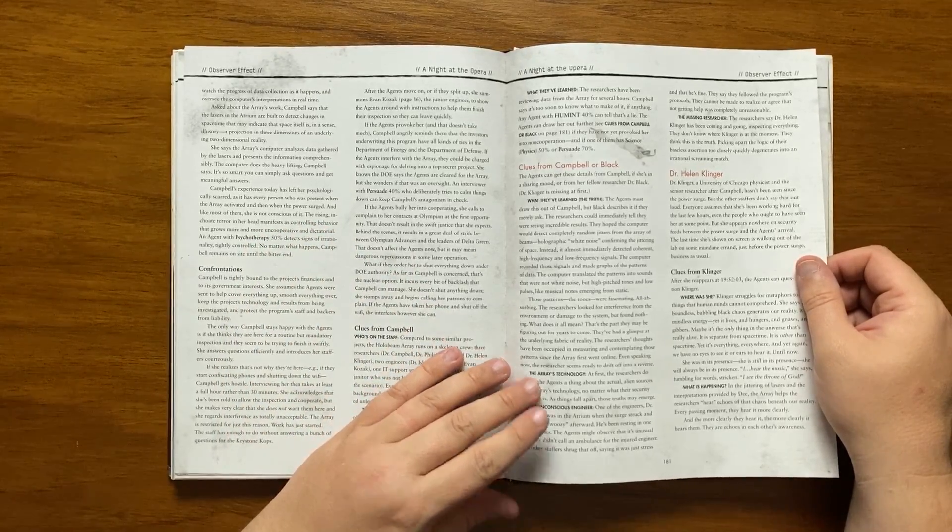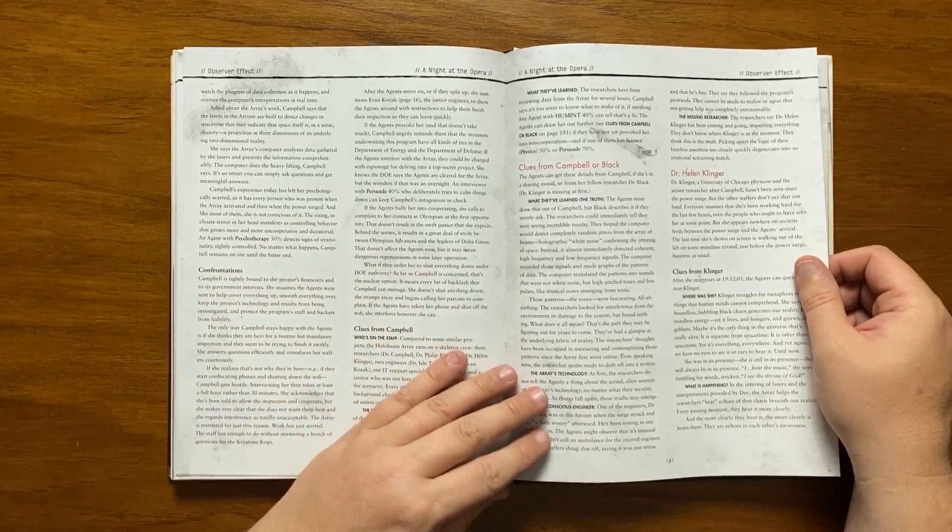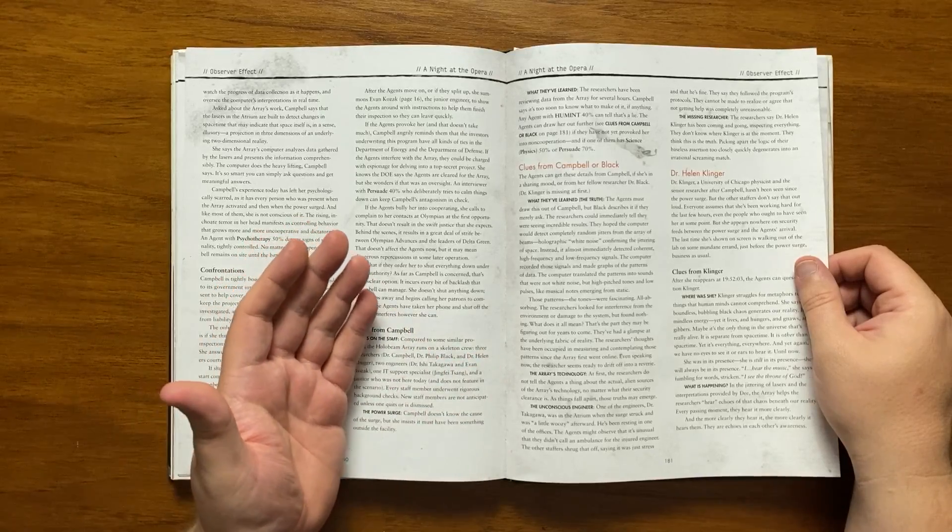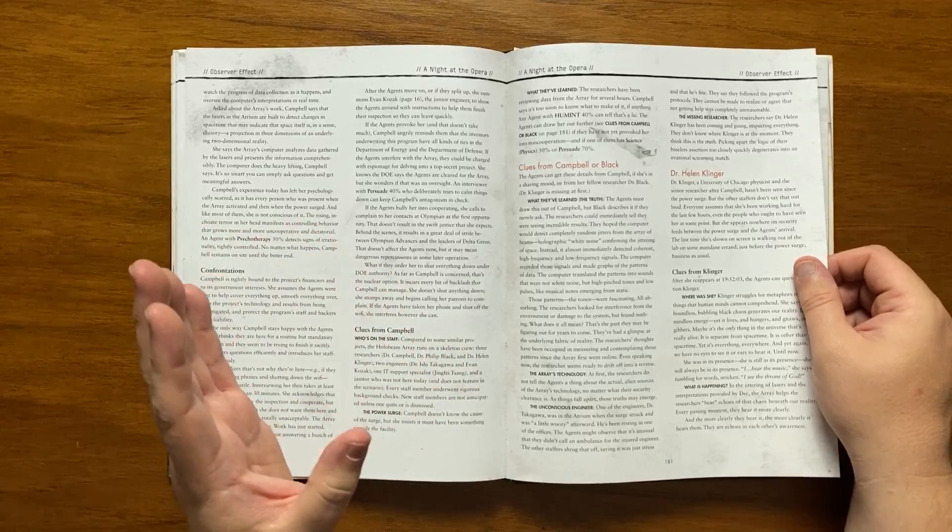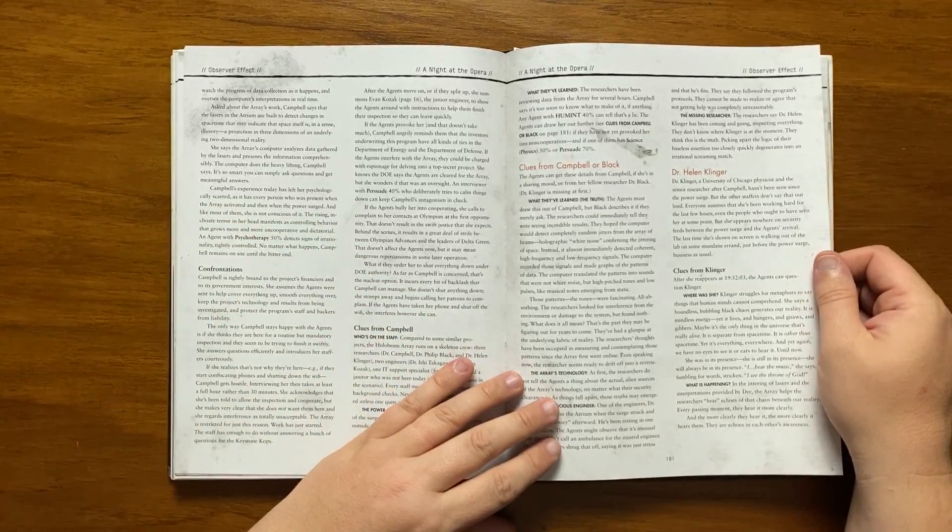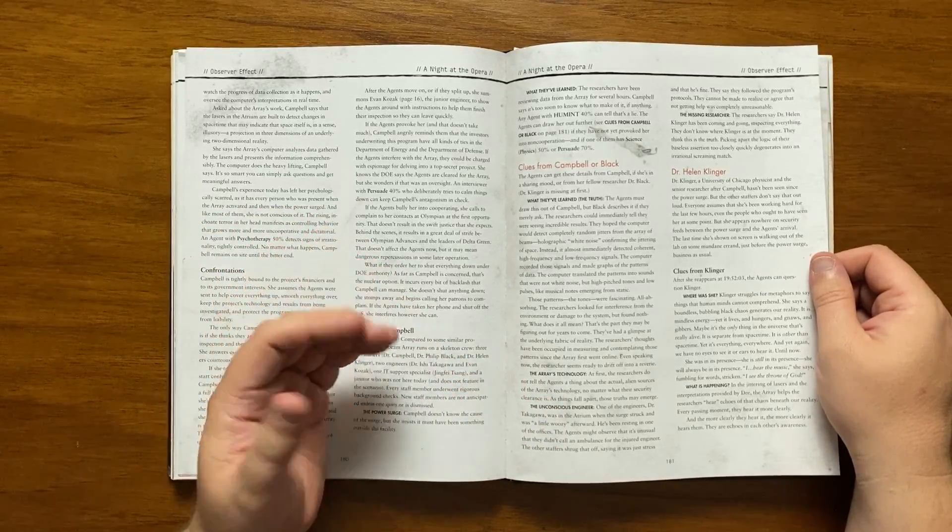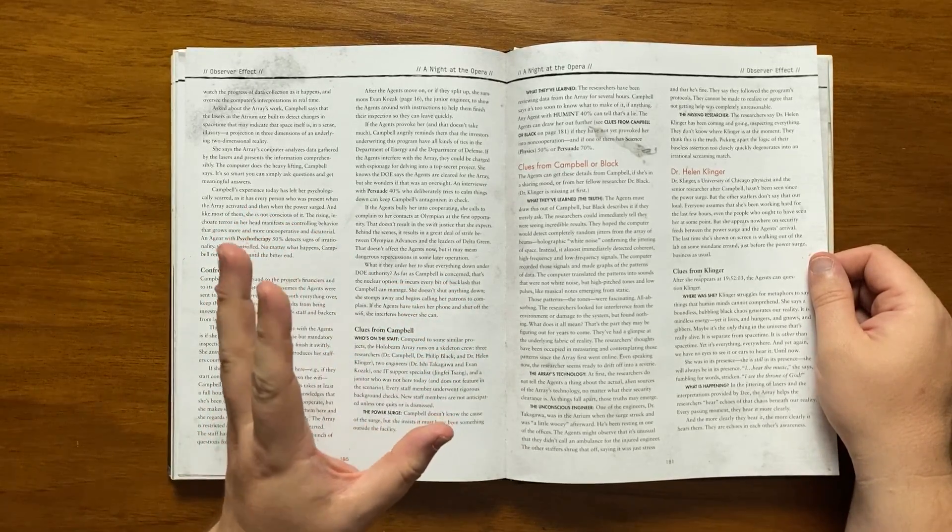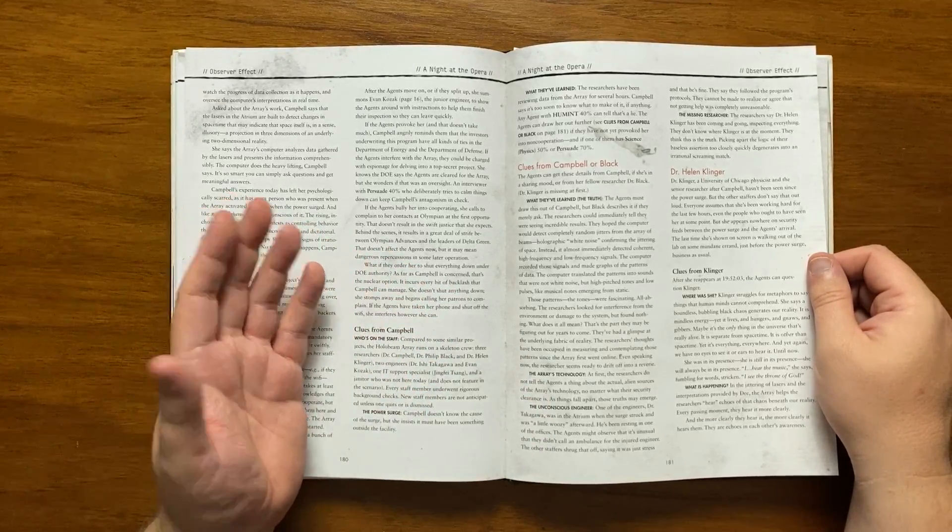We then move on to Dr Klinger. A senior researcher and physicist, she hasn't been seen since the power surge though nobody working there will say it out loud. They all assume that she is working on something elsewhere though she doesn't appear on any of the security feeds since the agents arrived. She'll reappear at 1952 when she eventually appears the agents can question her. She struggles with metaphors to describe where she was but settles on a boundless bubbling black chaos that is made of mindless energy that lives and she poses the idea that maybe it's the only thing in the universe that is actually alive. It's not only separate from space time it is beyond it. It is all and yet we were unable to see it until now. She describes hearing music and seeing the throne of God.